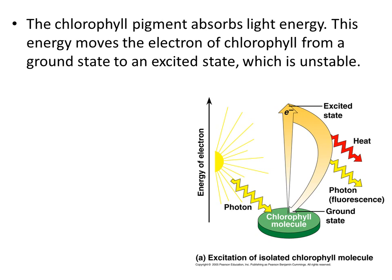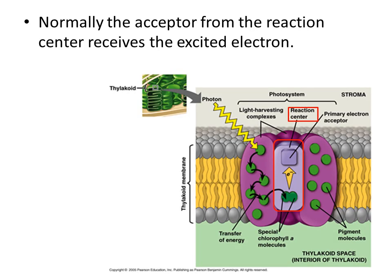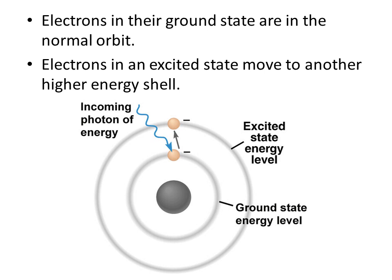The chlorophyll pigment absorbs light energy. This energy moves the electron of chlorophyll from a ground state to an excited state. This excited state is unstable. Electrons typically are in their normal orbit when they are in their ground state. When you stimulate a molecule with energy — and the molecule is made of hundreds of atoms — you can excite the electrons to move from their ground state to an excited state, a different shell.